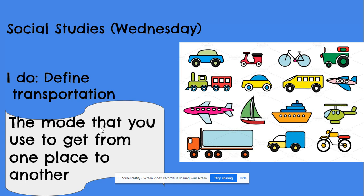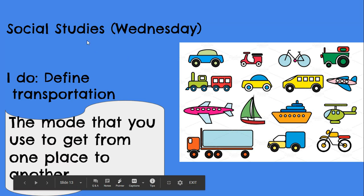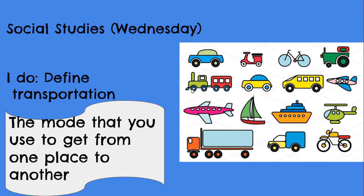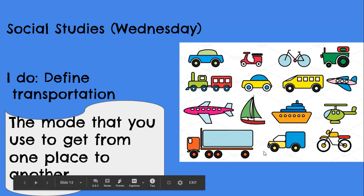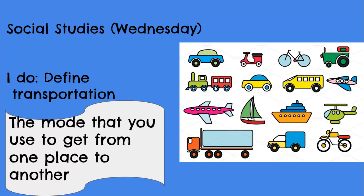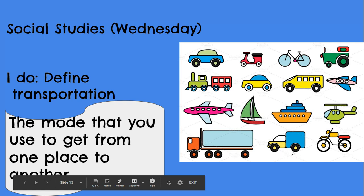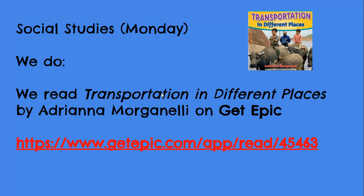Transportation is the mode that you use to get from one place to another. There are many different ways to transport a person or other things. We can go by car, scooter, bike, tractor, train, buses, planes and jets, sailboats and cruise ships, helicopters, semi trucks, pickup trucks, motorcycle, or even by foot.